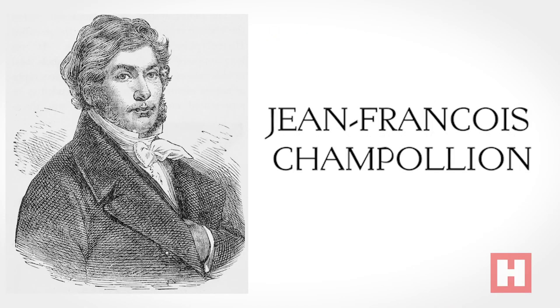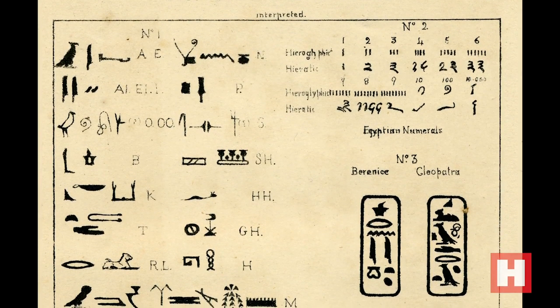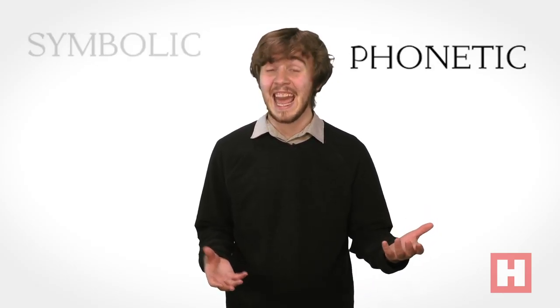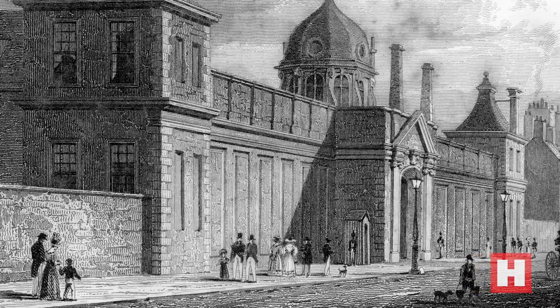It would be deciphered in 1822 by Jean-Francois Champollion, who, through comparison with both the Greek text and Egyptian tomb inscriptions, constructed an ancient Egyptian grammar and proved the hieroglyphics were both phonetic and symbolic.